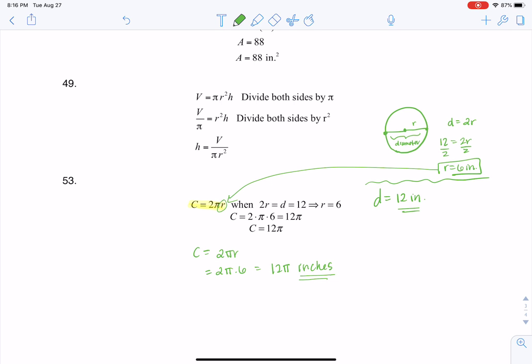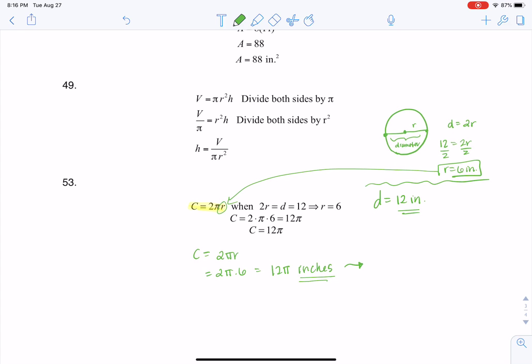And the problem said use the symbol pi in your final answer. So I'm just going to leave this as 12π. If you wanted to go further, and you don't need to because it said to leave it in pi, leave your answer with pi in there.